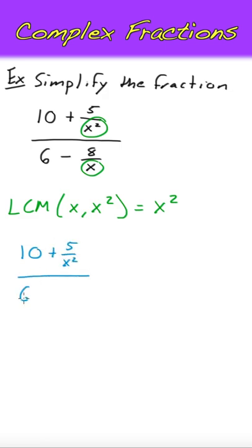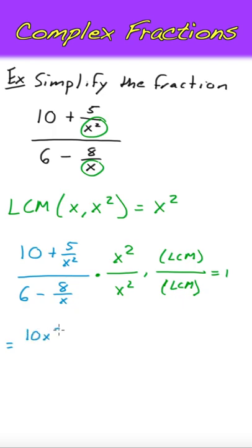Then, we'll multiply our complex fraction by 1 in the form of x squared over x squared. Distributing across the top gives 10x squared plus 5x squared over x squared, or simply 5.